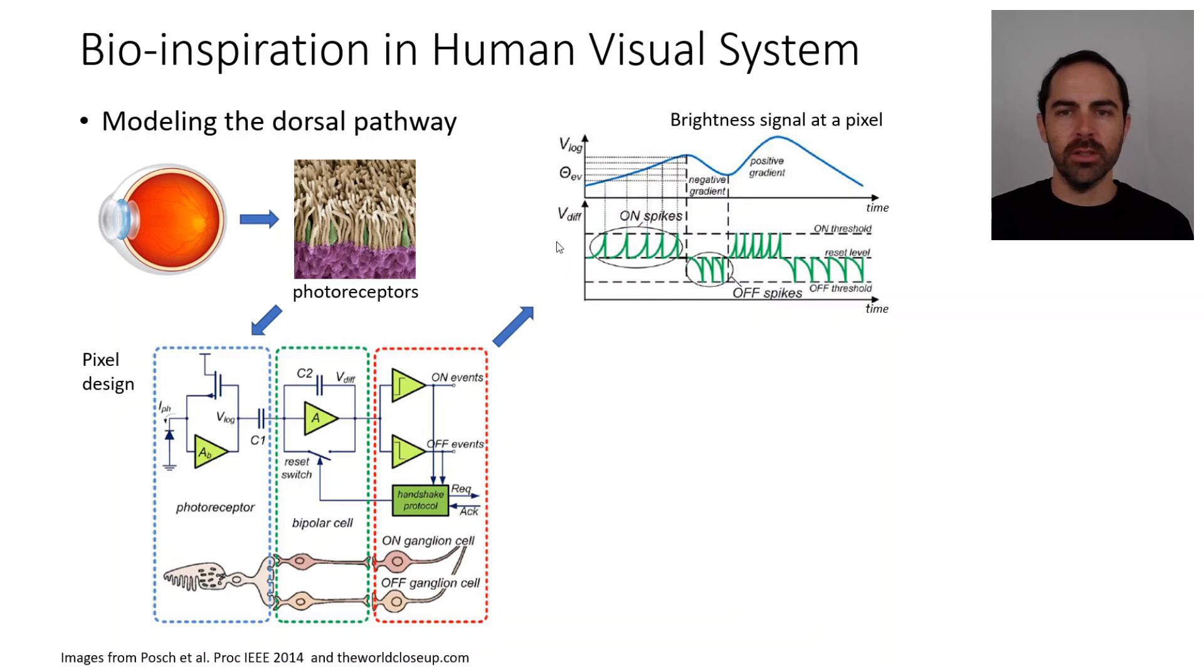If we take a look at how a continuous signal is converted from the input to the output, light comes, goes to the photodiode, and then the photodiode will convert it into eventually a voltage. This blue line represents the voltage at this point in this diagram.